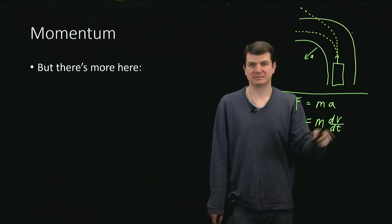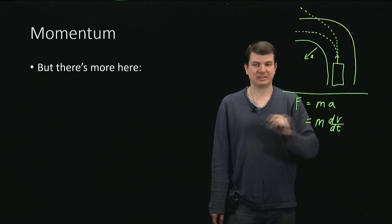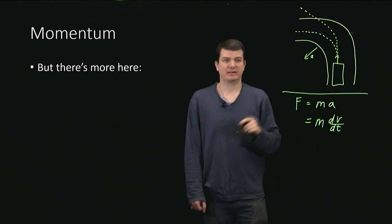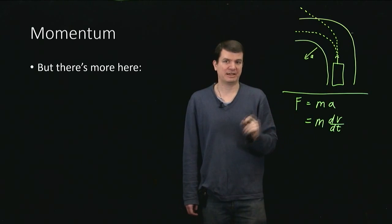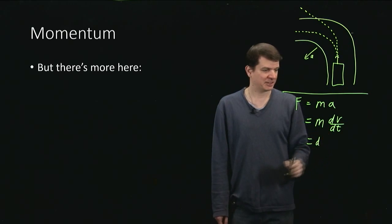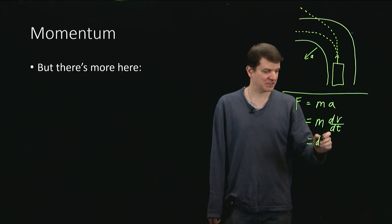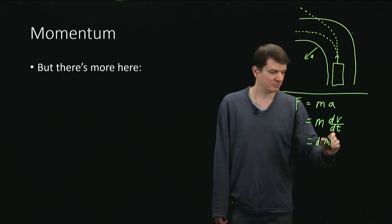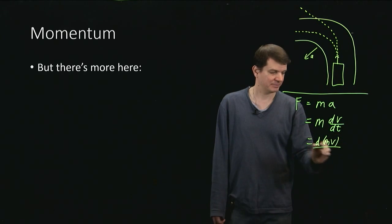I can manipulate this by pulling the m inside the derivative. And I can do that because mass is constant, so it has no effect. So I can write this now, instead of m times the time rate of change of velocity, as the time rate of change of the product, mv.